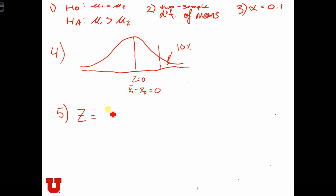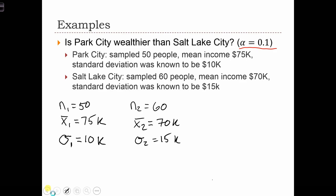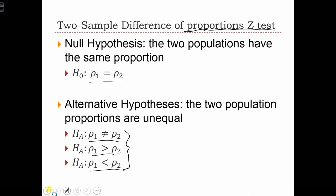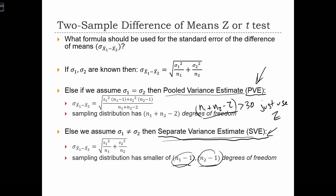Z is equal to x̄1 minus x̄2 over the standard error of the difference of means. For this equation, since in our case σ was known, let's see which equation we're going to use. Sigmas were known, so therefore we're going to take the square root of the variance divided by the sample sizes.